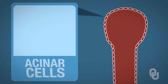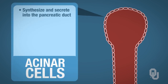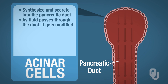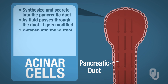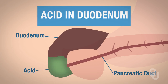Remember, it's the acinar cells that are going to synthesize and secrete into this duct, and as that fluid passes through the duct, it's going to get modified. And then it will get dumped into the GI tract. Let's start with the acids in the duodenum.